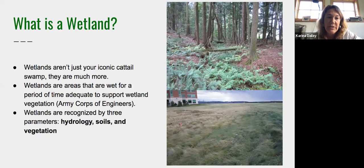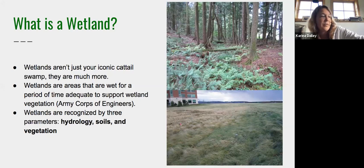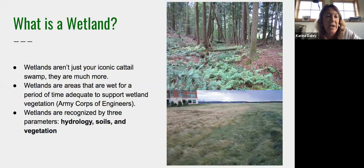Wetlands aren't necessarily wet for that long in the growing season. They only need to support wetland vegetation for about two weeks of the growing season — it can be just a tractor rut that holds water for a certain period. If it's holding water for two weeks, that's long enough to change the soil type underneath and the vegetation on top, creating what's called a definitional wetland.